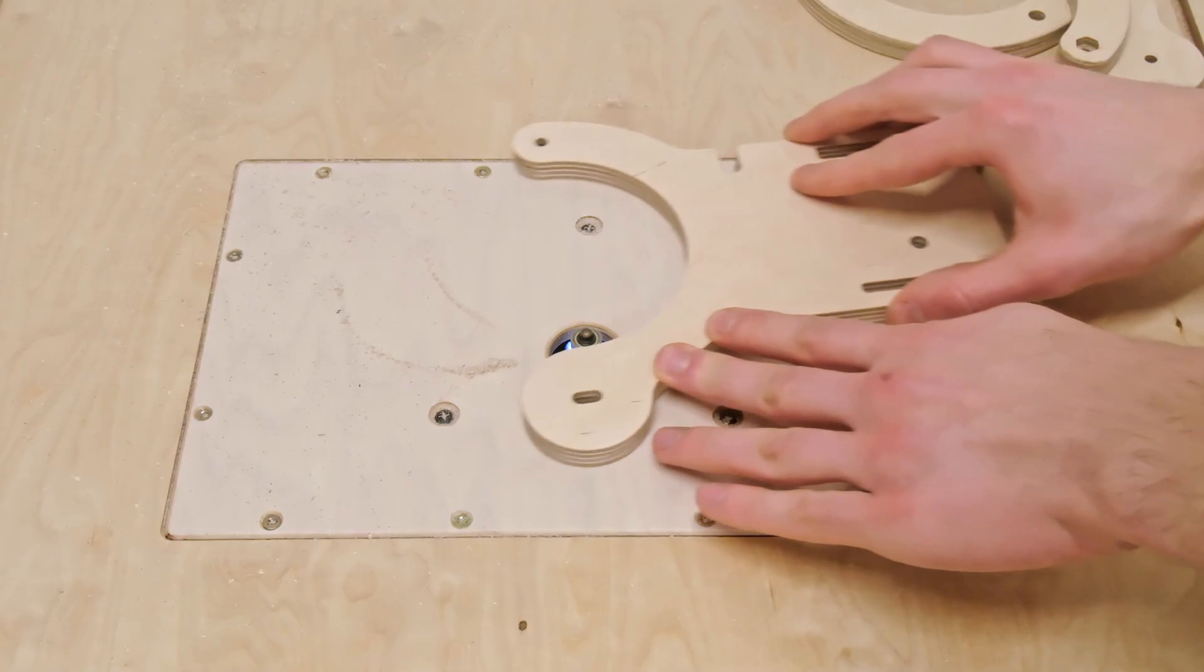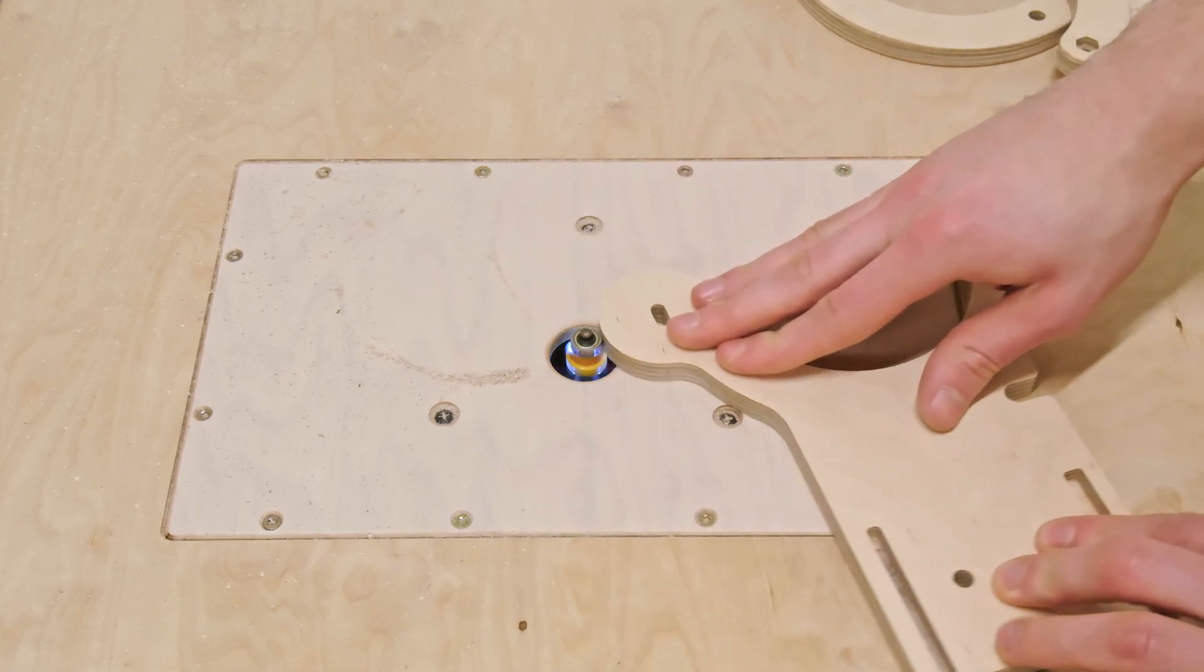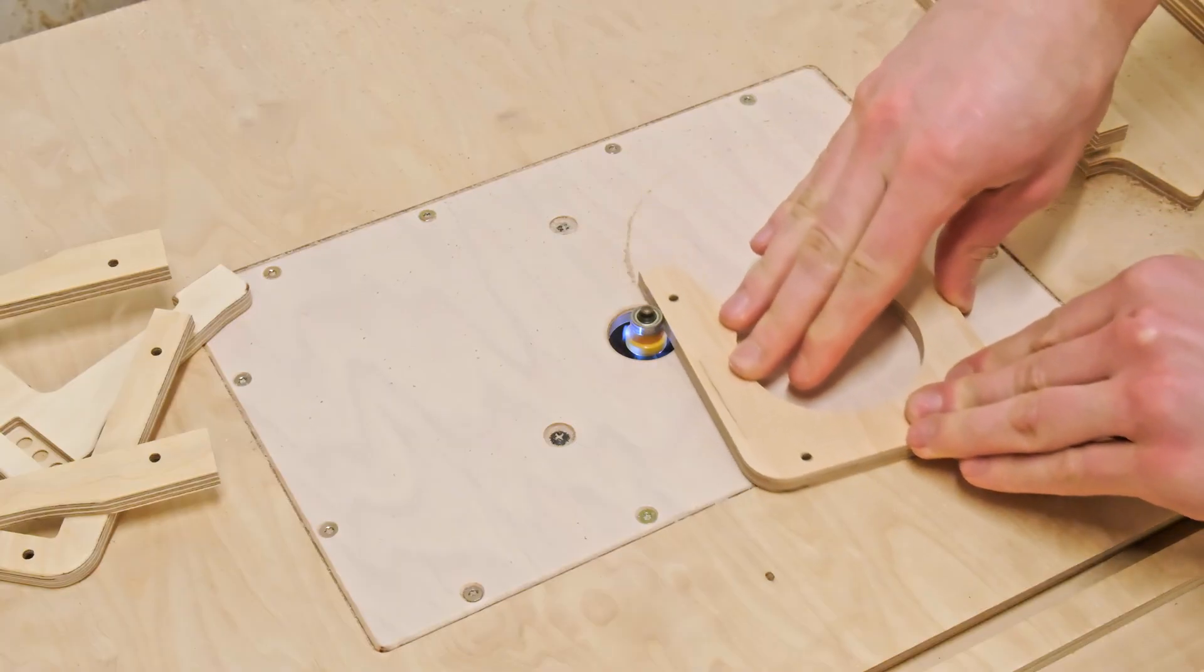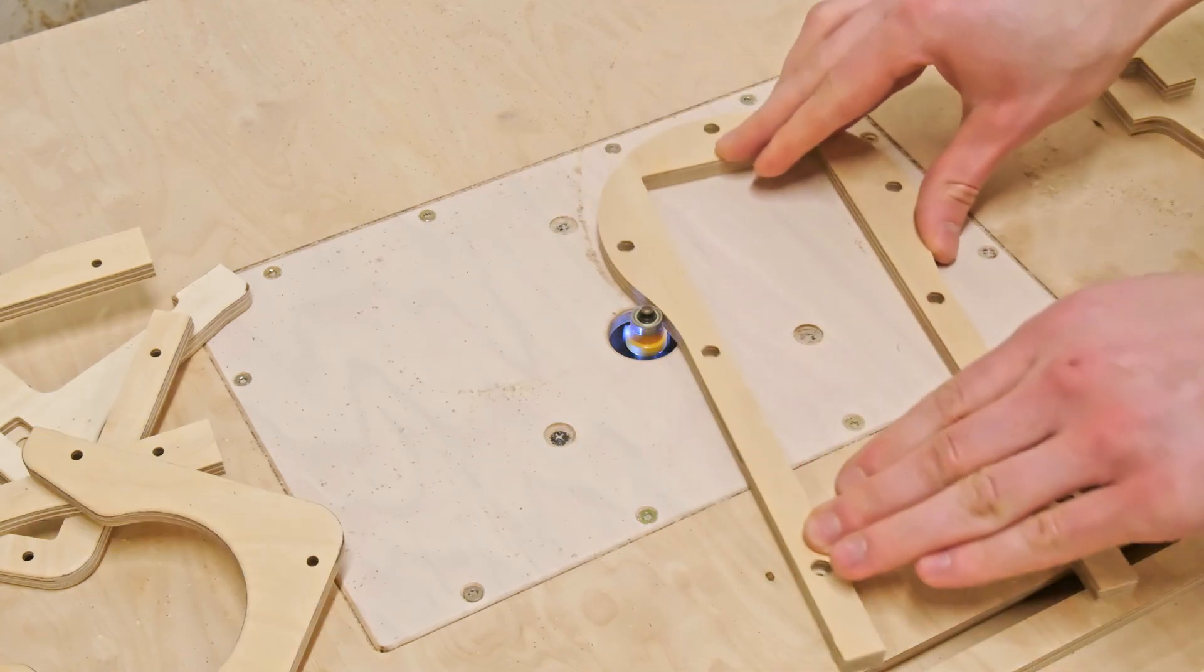This time, we are using a 3mm round over bit which leaves us with nicely rounded edges. The only thing we have to pay attention to when working on the router table is not to trim the edges inside the dust shoe.